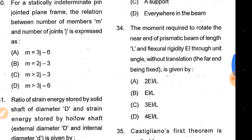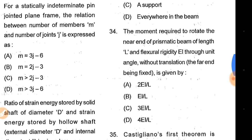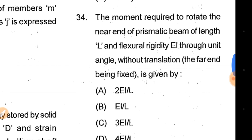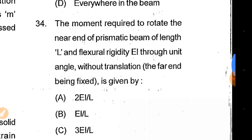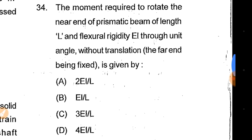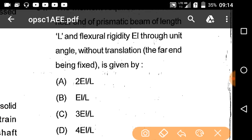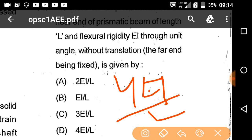Question 34: The moment required to rotate the near end of a prismatic beam of length L and flexural rigidity EI through a unit angle — with the far end being fixed — is 4EI by L. Option D is correct.